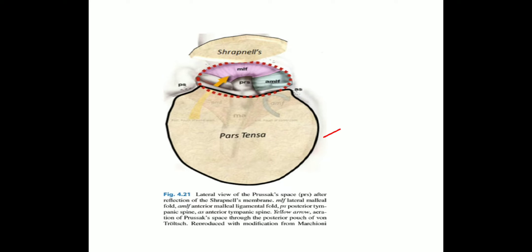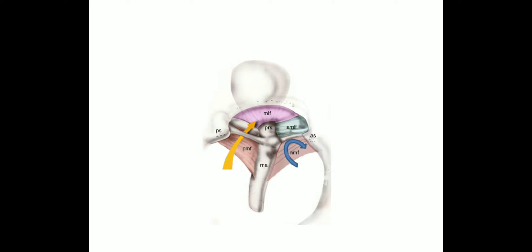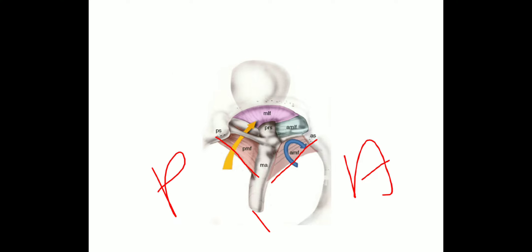Looking at the pars tensa and pars flaccida, when we remove them we can see the mucosal folds. A fold between the handle of the malleus and the anterior tympanic spine is called the anterior tympanomalleal fold. Similarly, a fold between the handle of the malleus and the posterior tympanic spine is called the posterior tympanomalleal fold.